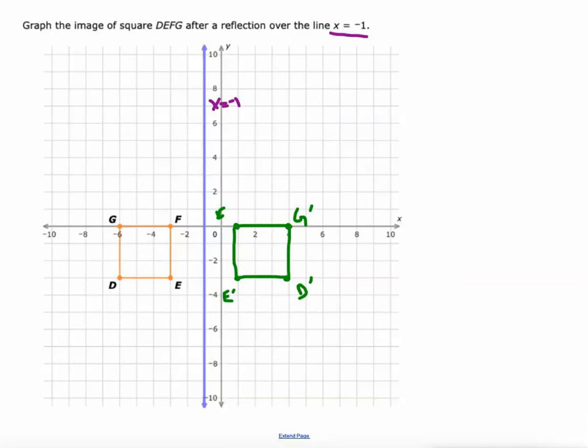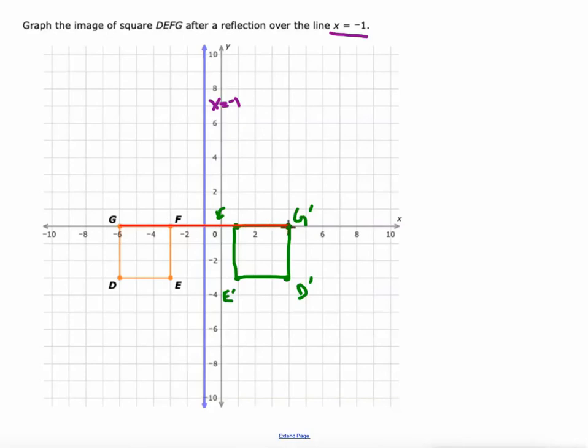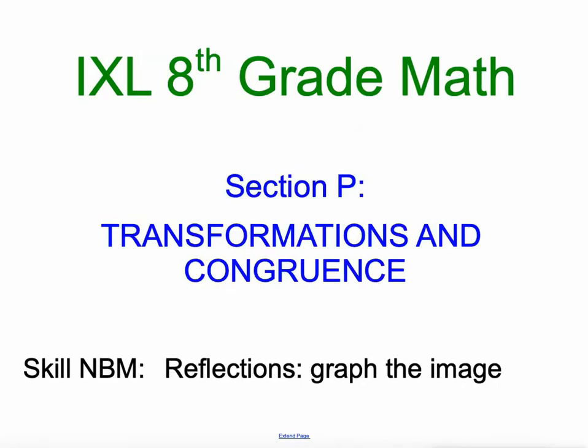One more time, this idea of connecting corresponding vertices: connect G to G prime, connect E to E prime. Each one of those lines are parallel to each other because they're both meeting the line of reflection at a 90 degree angle, and each one is cut in half by the line of reflection. That should more than get you going on this skill: reflections graph the image in section P of IXL's eighth grade math.